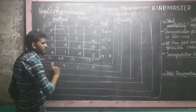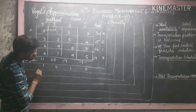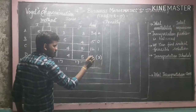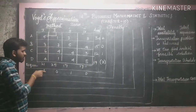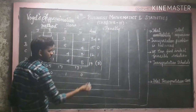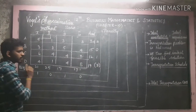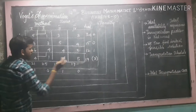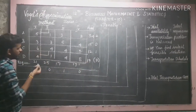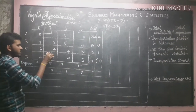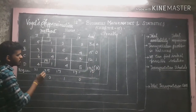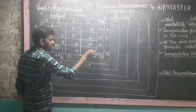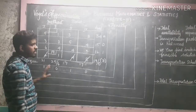Now we find the maximum penalty. The maximum penalty is 3, so we mark it with a bracket. We look at the corresponding row and find the least value in that row, which is 1. We allocate to that cell. Comparing 19 and 25, the least is 19, so we allocate 19. After allocation: 19 minus 19 equals 0, and 25 minus 19 equals 6. Since we get 0, we cancel the corresponding row — no further allocation in this row. The first step is complete.